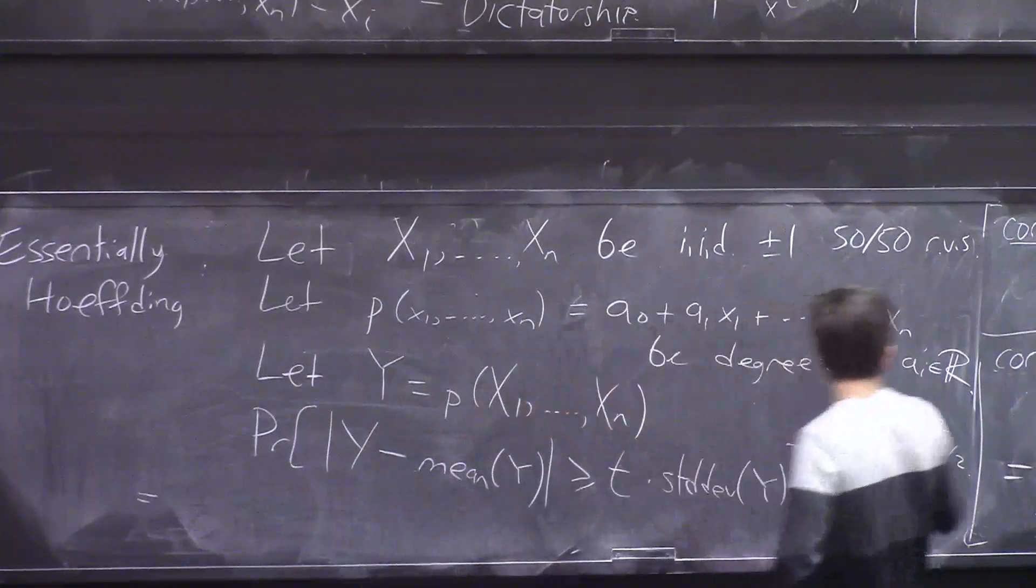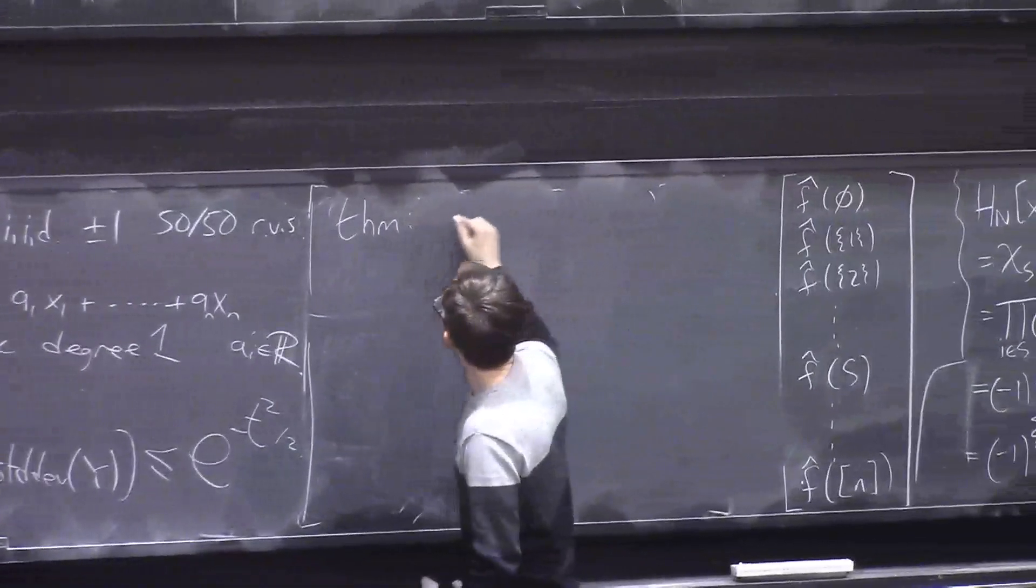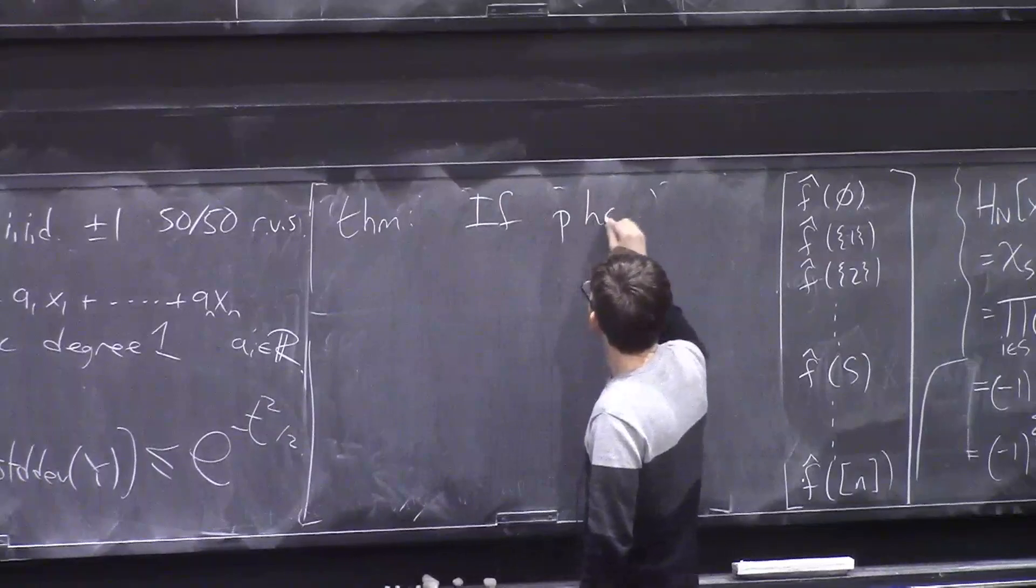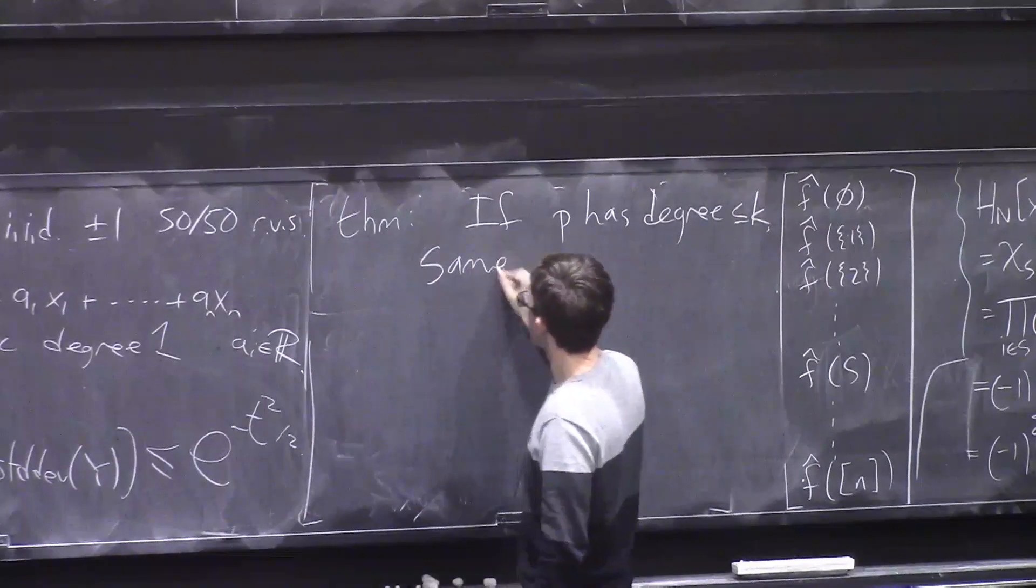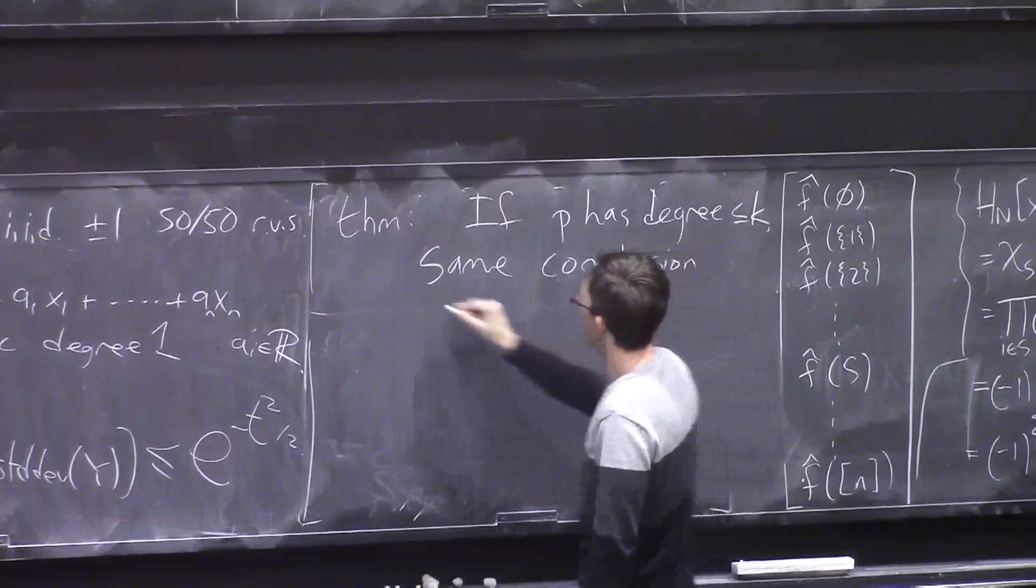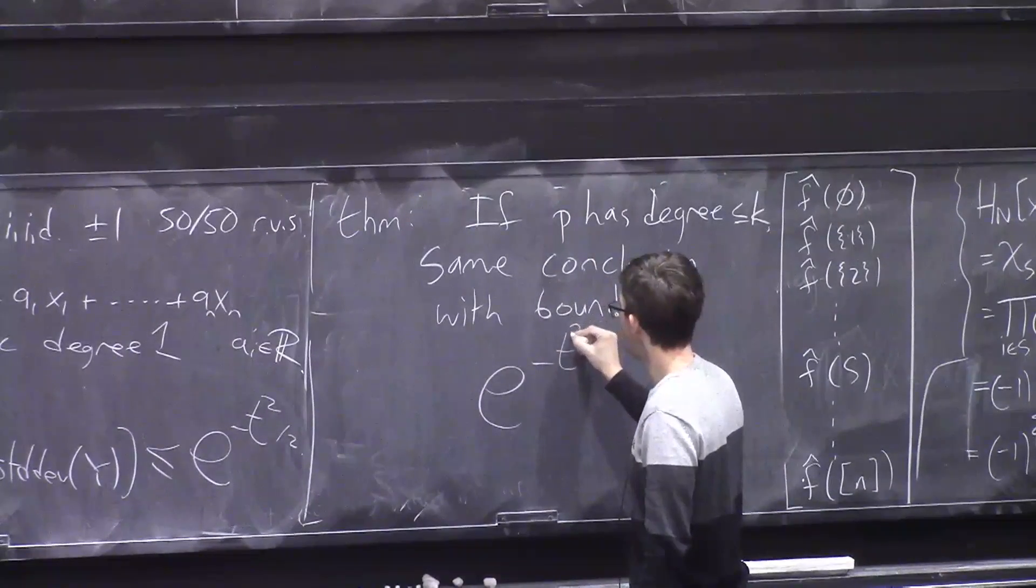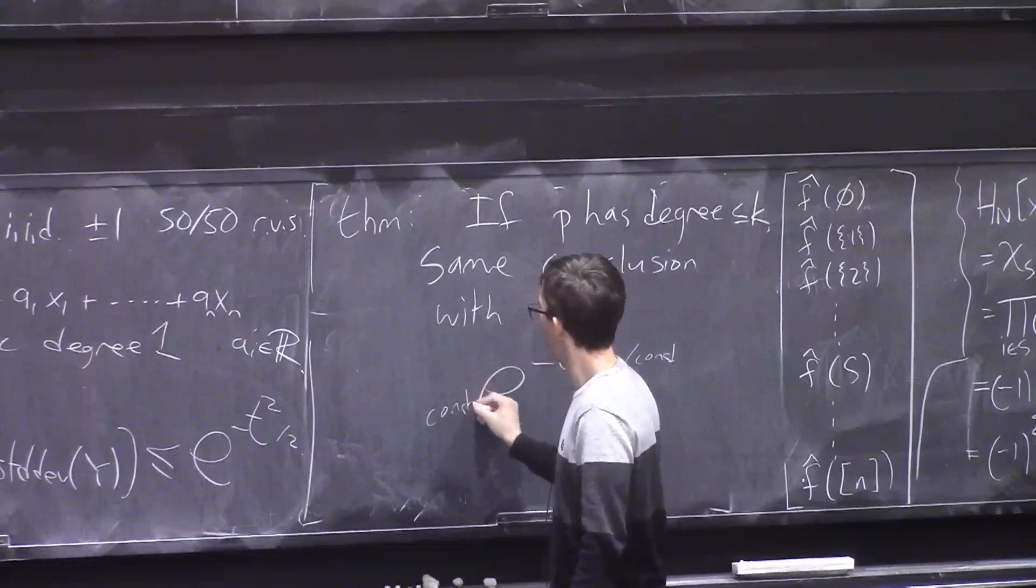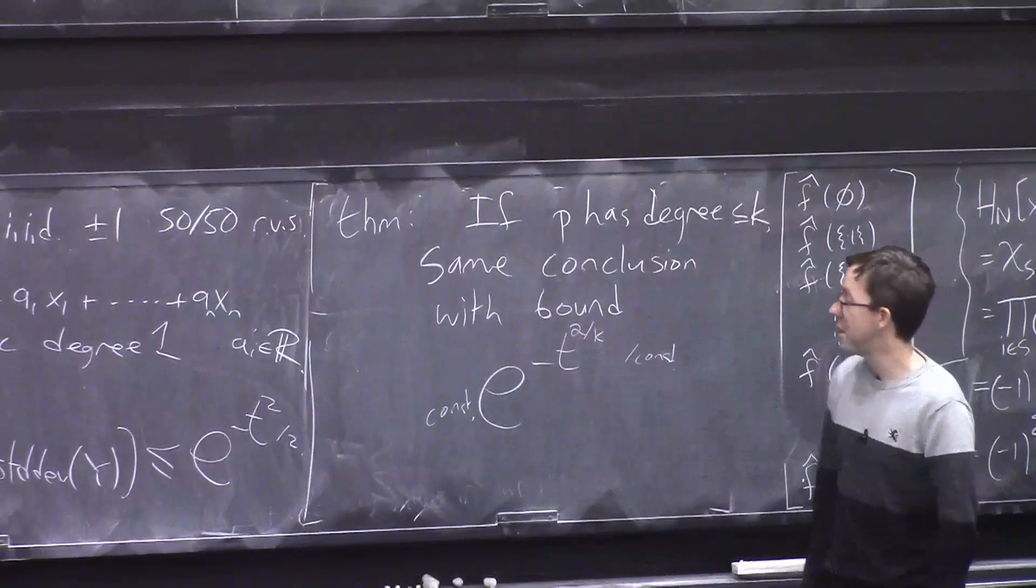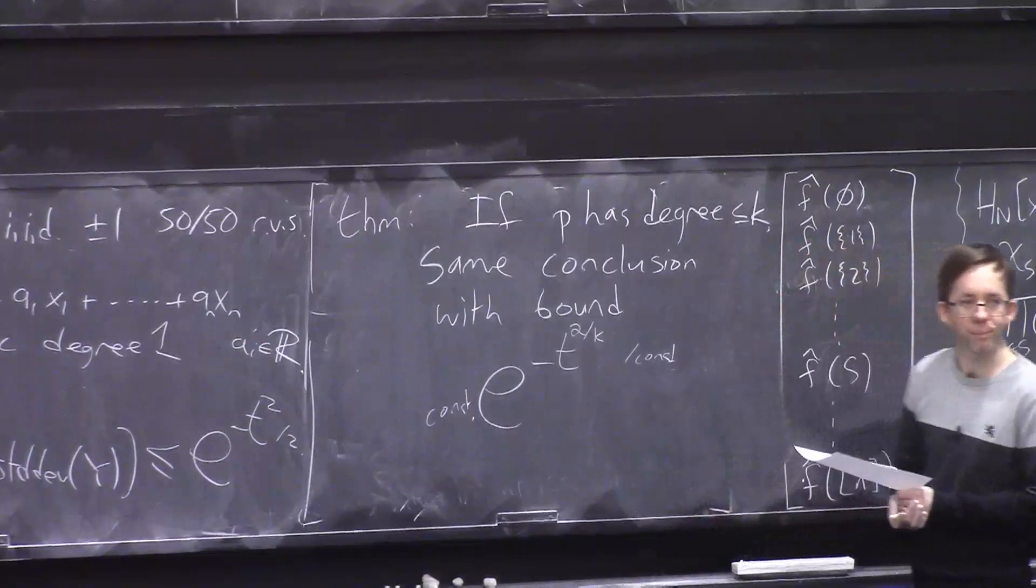The final thing I'll tell you is that using analysis of Boolean functions, you can prove a generalization of this to higher degree polynomials. So the theorem is that same setup, but if P has degree at most k, same conclusion, but with a worse bound, but still an exponentially strong bound. It's like e to the minus t to the 2 over k over some constant. So if k is 1, it matches. And you know, still if k is 2 or 3 or 4, you still get some exponentially fast decay of the probability of being far away from your mean.